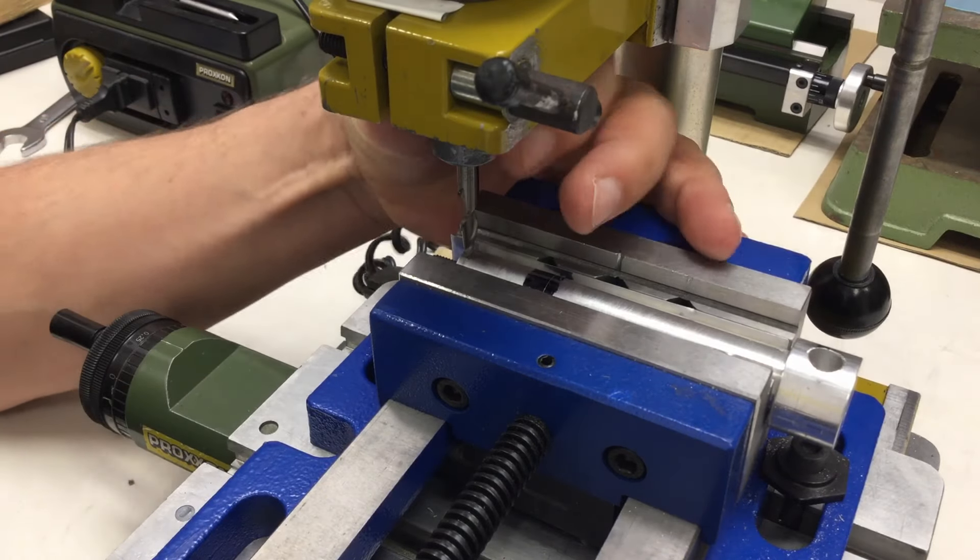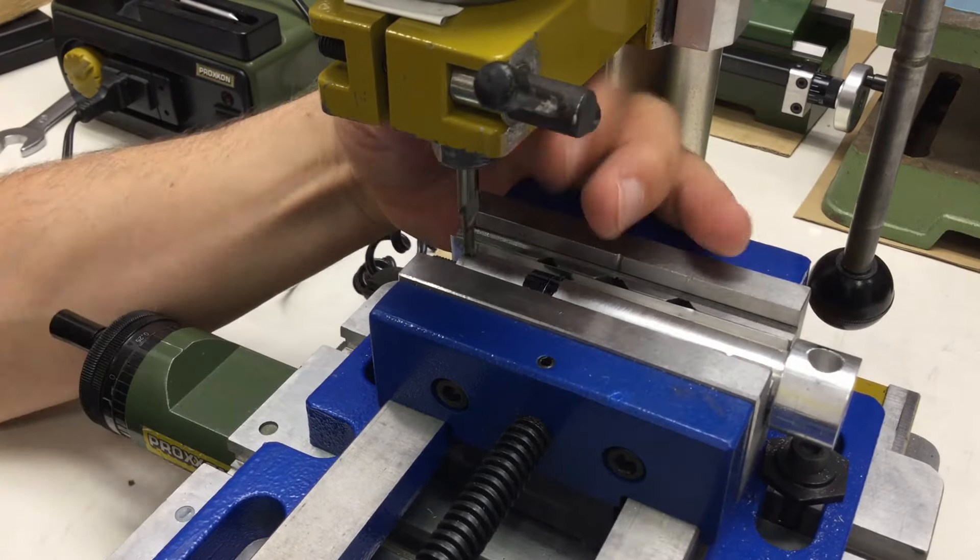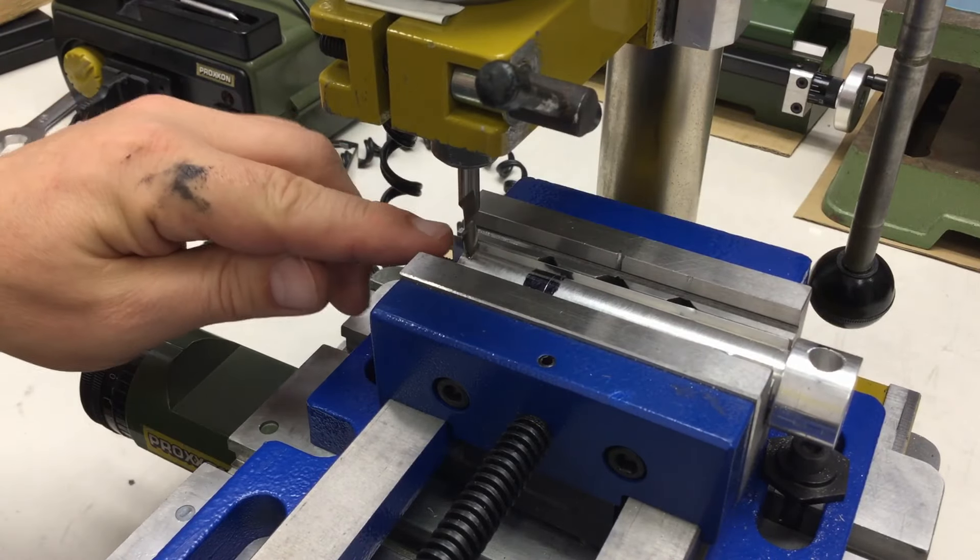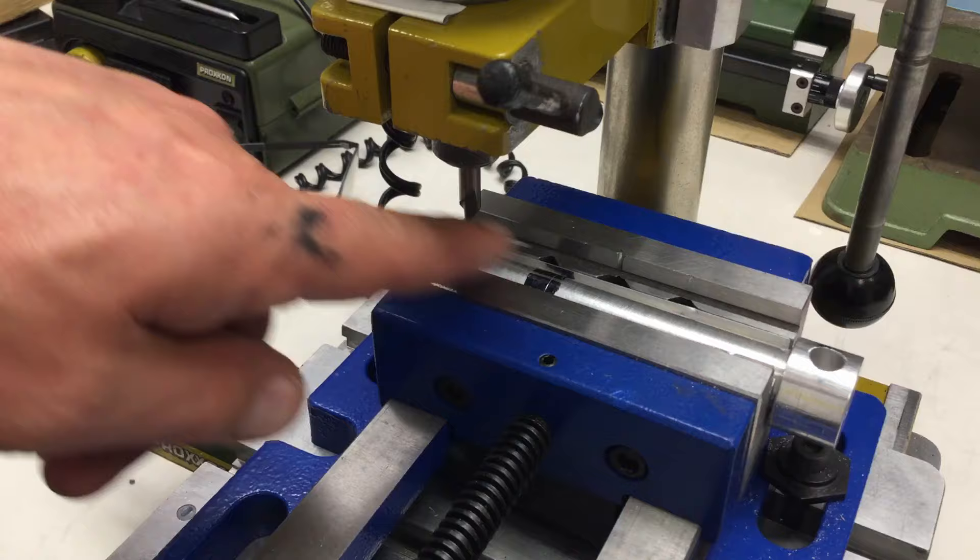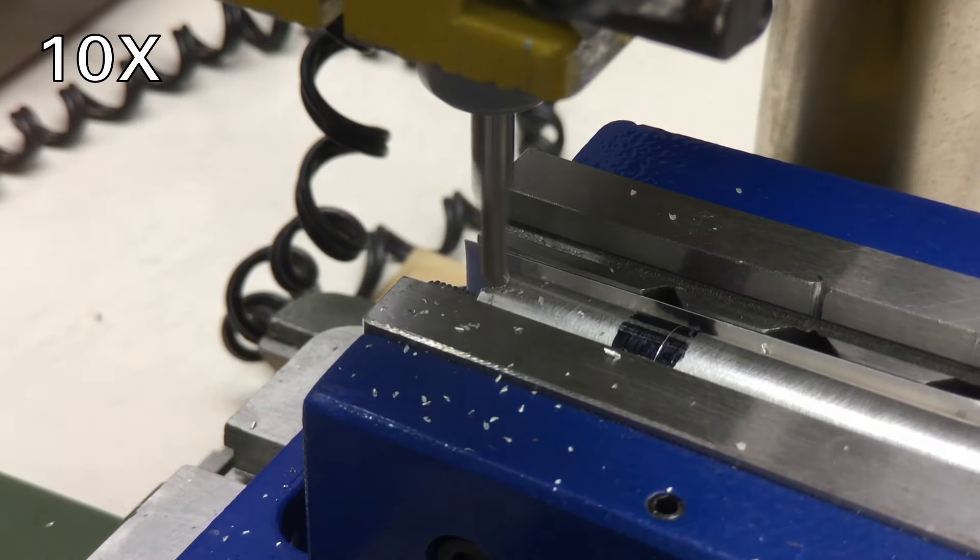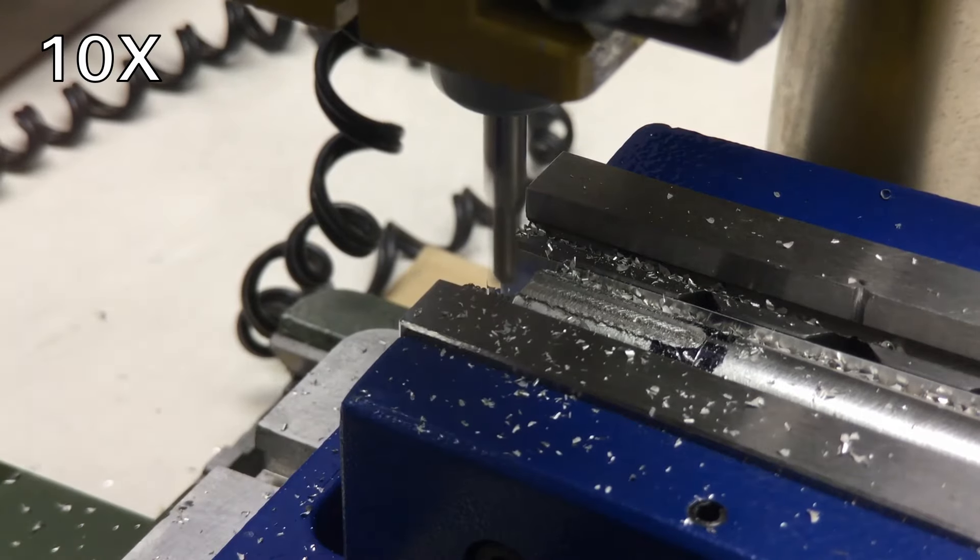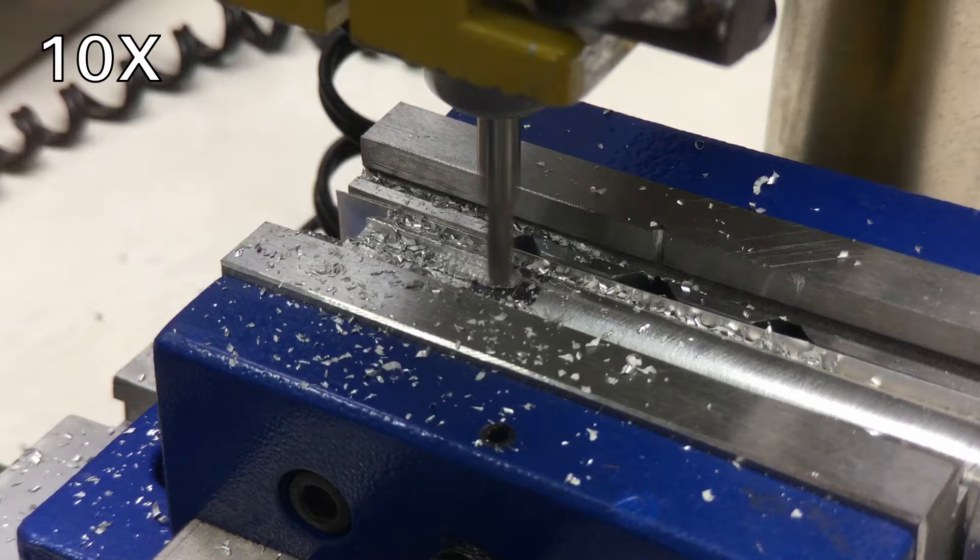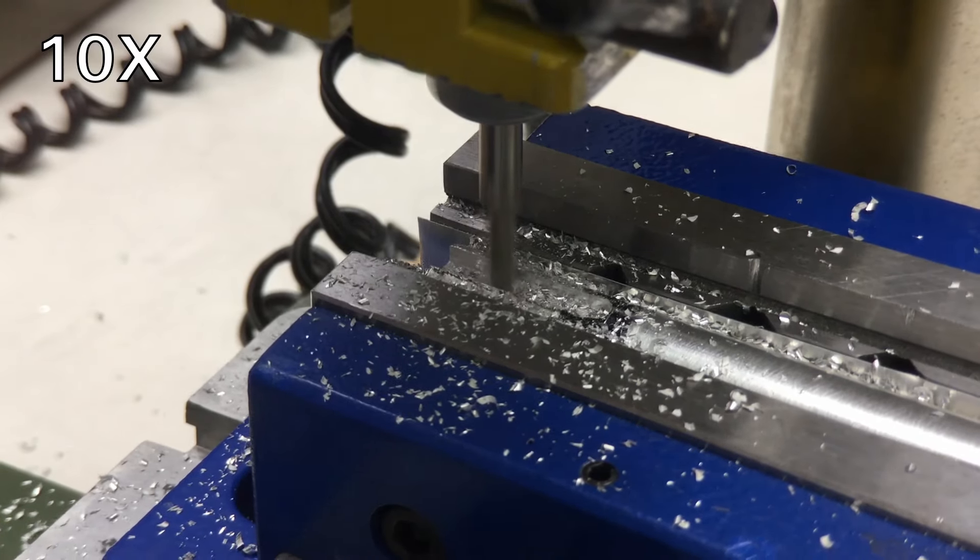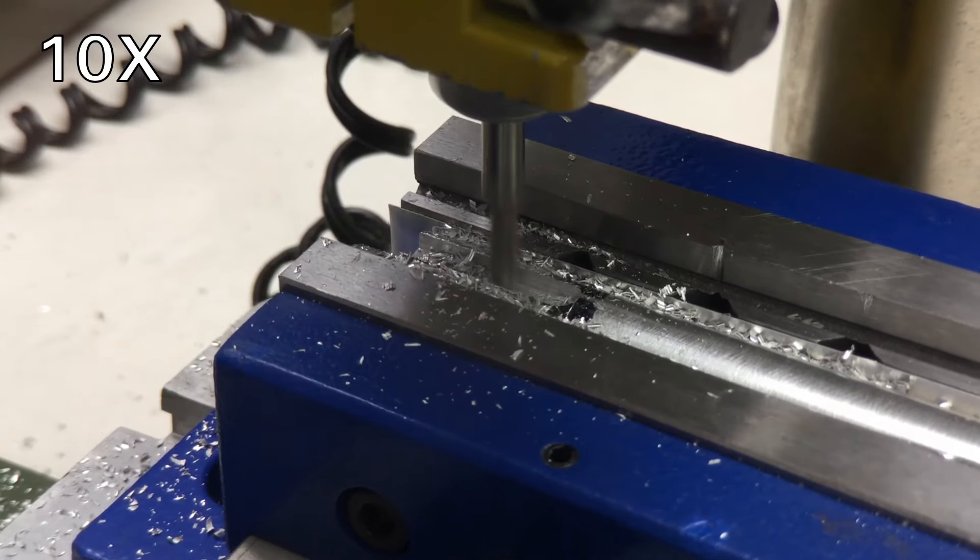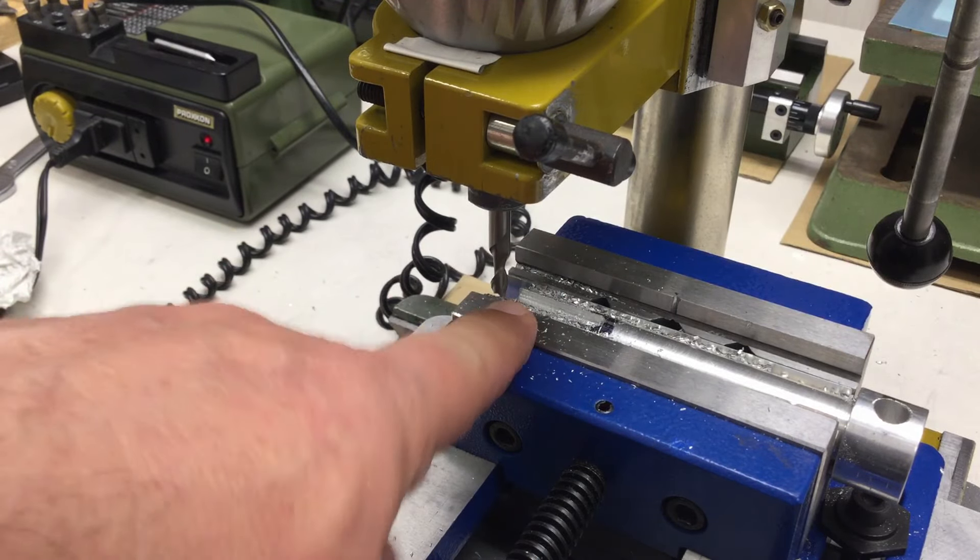I hope we're again on the center and now we mill the slot. I first go down here very slowly until I'm just touching. Okay I'm touching, that is my zero now and now we need to go three millimeters down, I do that in several passes. And we're done. Let's get the thing out, clean up first, get that thing out and have a look at it.